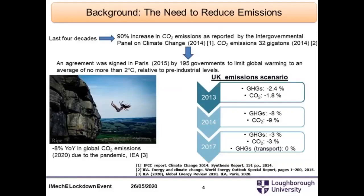Let me start with the background on why we need to reduce emissions. A report by the Intergovernmental Panel on Climate Change stated that during the last four decades there has been a 90% increase in CO2 emissions — figures published in 2014. During that year, the International Energy Agency found that CO2 emissions were as high as 32 gigatons, though they remained unchanged compared to the previous year. In 2015, the Paris Accord was signed by almost 195 governments, pledging to limit global warming to no more than two degrees Celsius above pre-industrial levels.